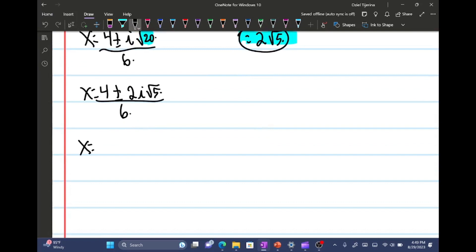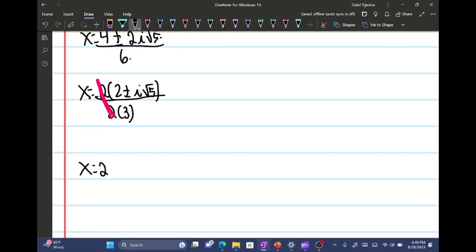So this will give us x equals 4 plus or minus 2i square root 5 all over 6, which is x equals 4 plus or minus, and actually here, so then we're gonna get 2. So we have to factor the 2 out. So we're gonna do 2 times 2 plus or minus i square root 5, and then all over 2 times 3, because 2 times 3 is 6. So then this will cancel out.